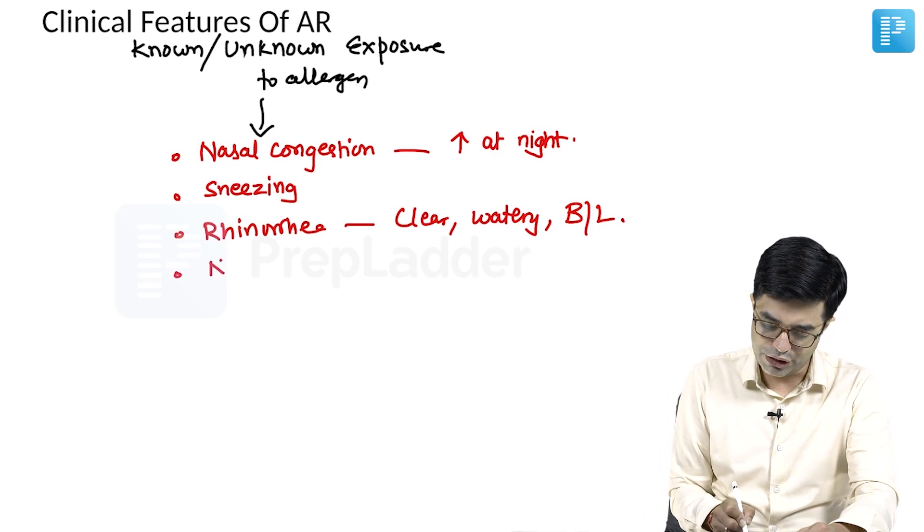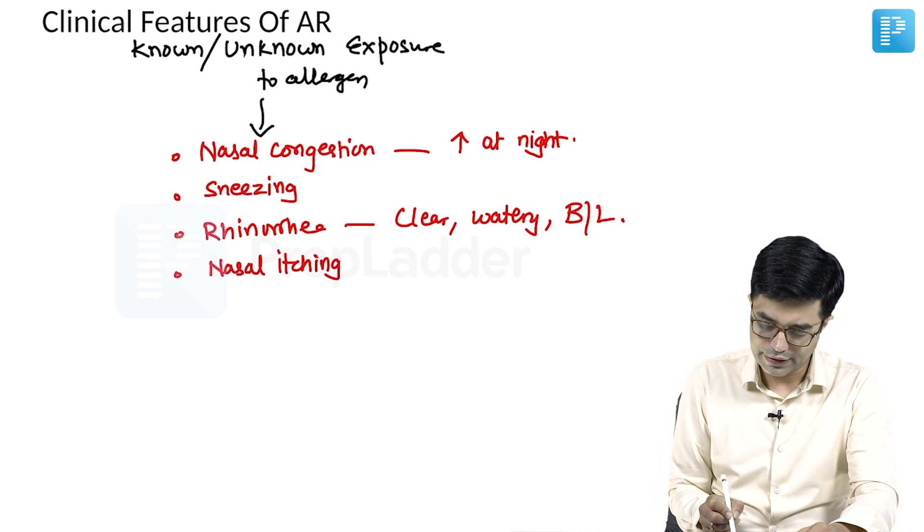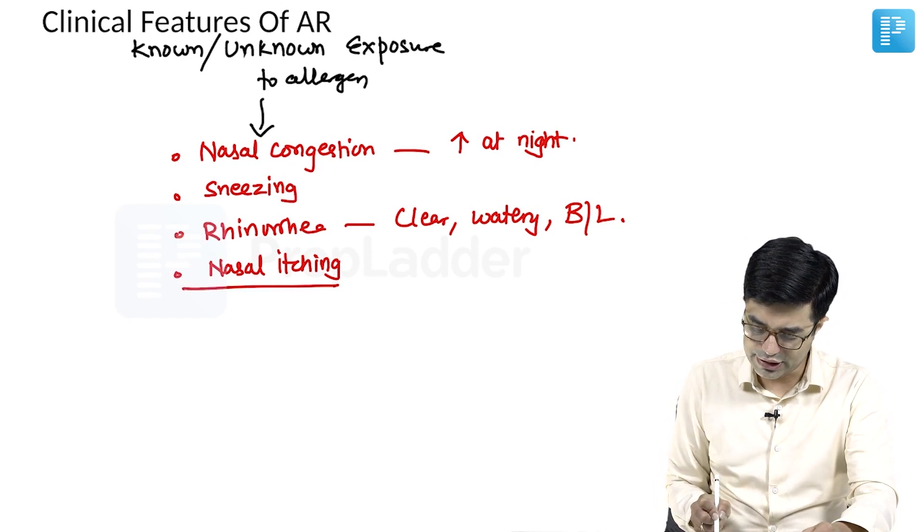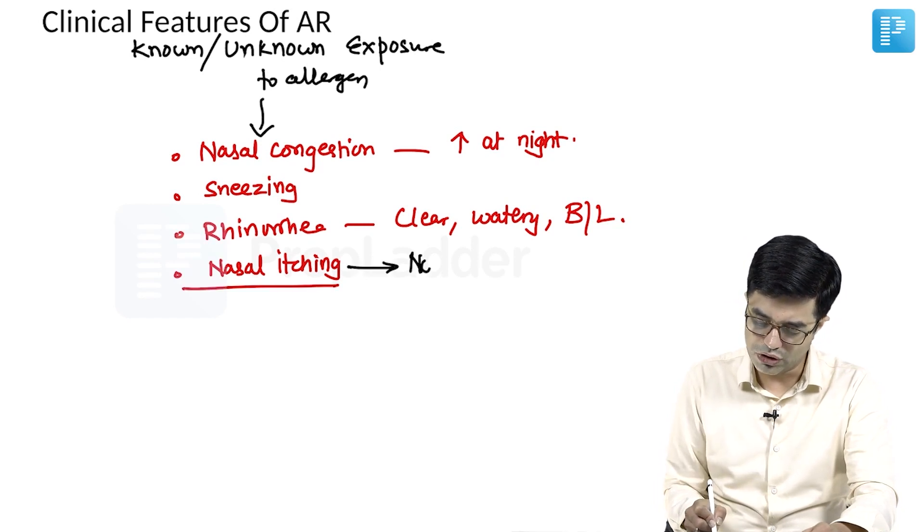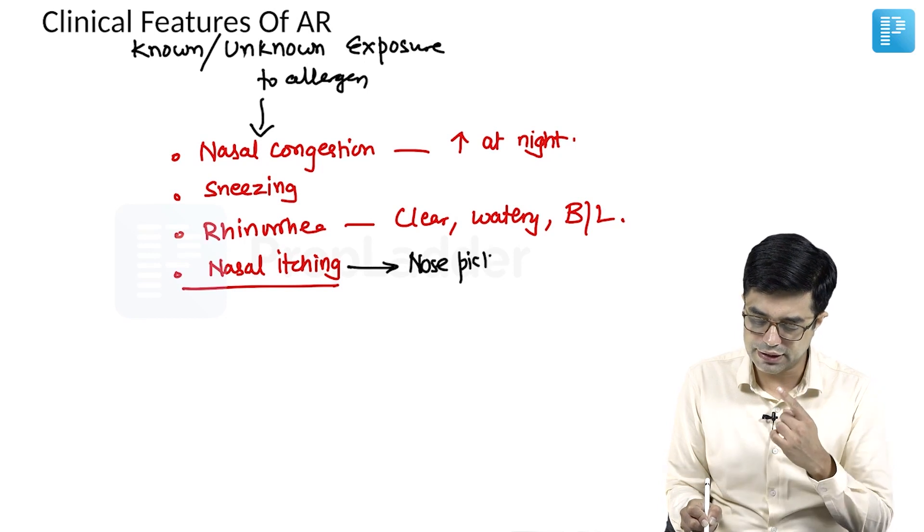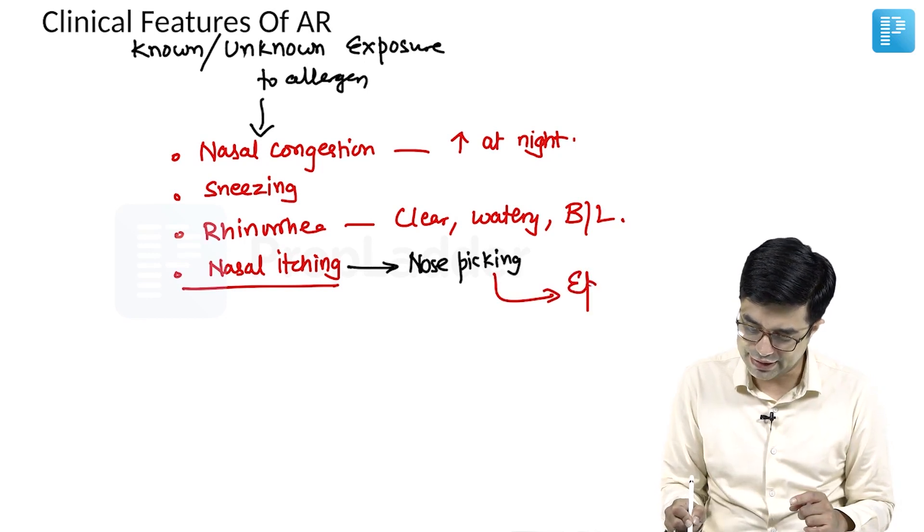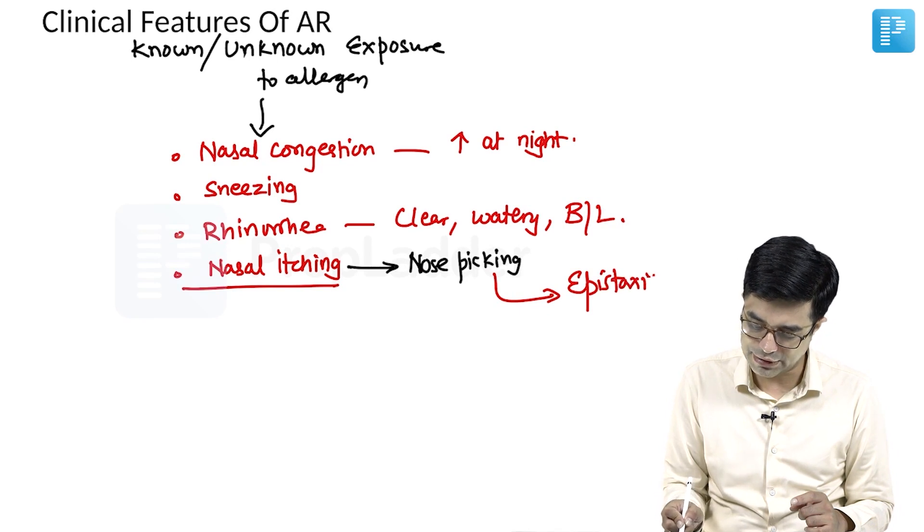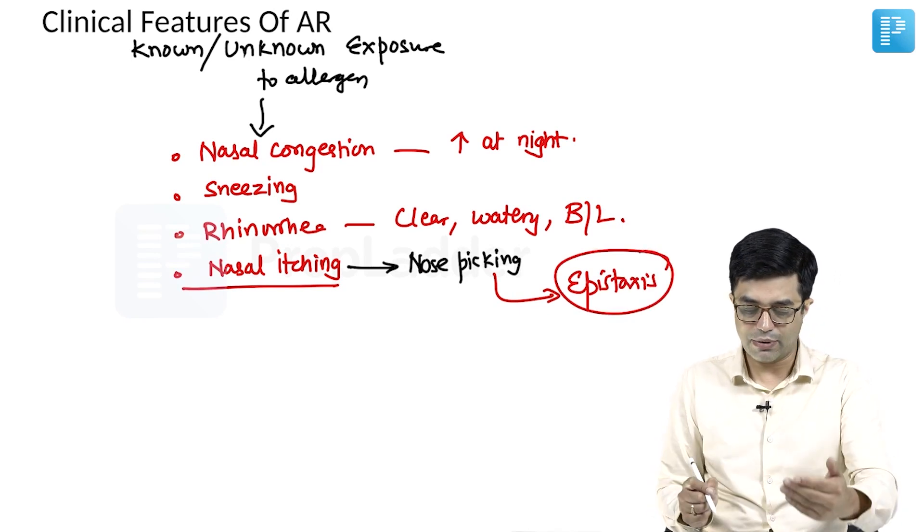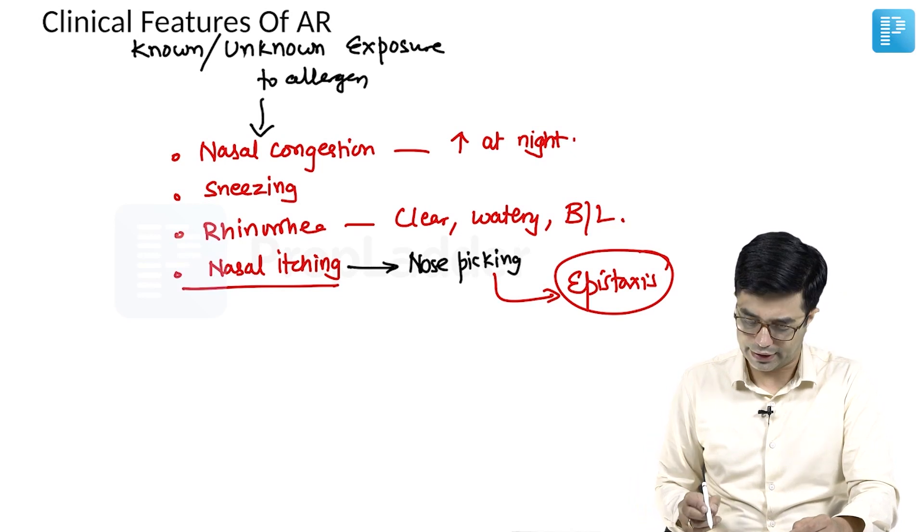Plus there will be nasal itching. Because of nasal itching, the child will have a tendency to do nose picking. The child will put his fingers into the nose and because of that, the child can develop epistaxis as well. So epistaxis can sometimes be seen as a sequela of allergic rhinitis.